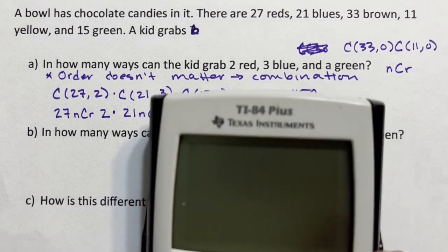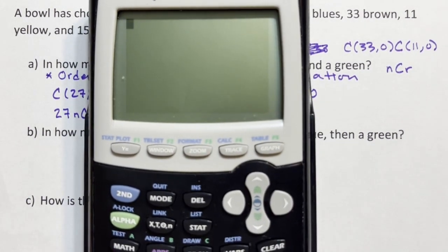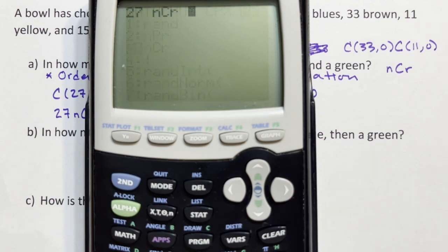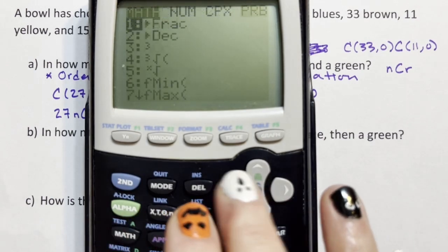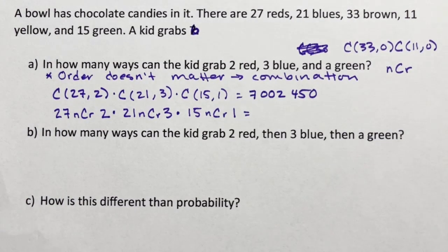Last but definitely not least is a graphing calculator. This is one that a ton of students have. For this one to get to the probability things we need that probability menu. It is not on the front display, we have to hit the math menu and then it's over here prb. I could also hit three because it's the third option.